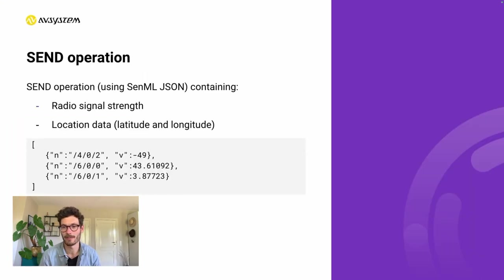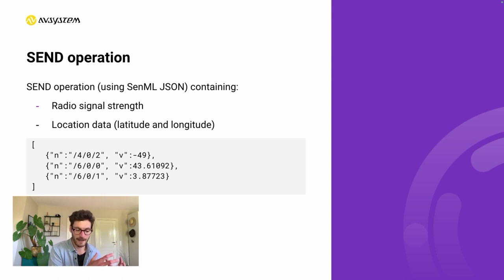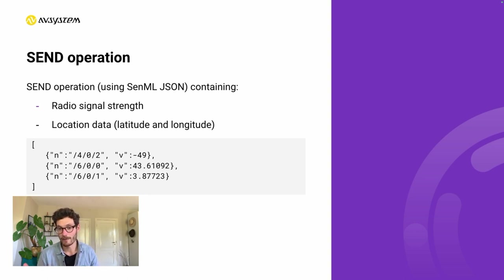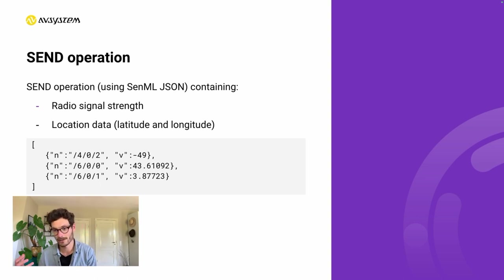Let me explain what a Send operation may look like. In this example, we use SenML JSON to send radio signal strength and location data. Before sending the actual data, we first indicate what type of data we are about to send. Object ID 4 is about connectivity monitoring; Resource 2 is radio signal strength. For location, Object ID 6 represents location, Resource 0 is latitude, and Resource 1 is longitude. When combined, that gives us this specific message.